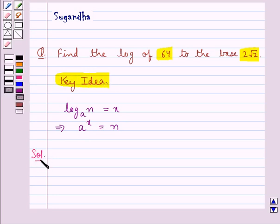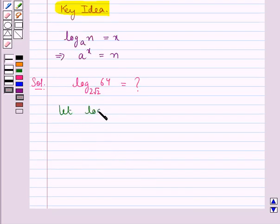Let's proceed with the solution now. We are supposed to find log of 64 to the base 2 root 2. Now we suppose let log of 64 to the base 2 root 2 be equal to x. So from the key idea we have that this means 2 root 2 whole to the power of x is equal to 64.